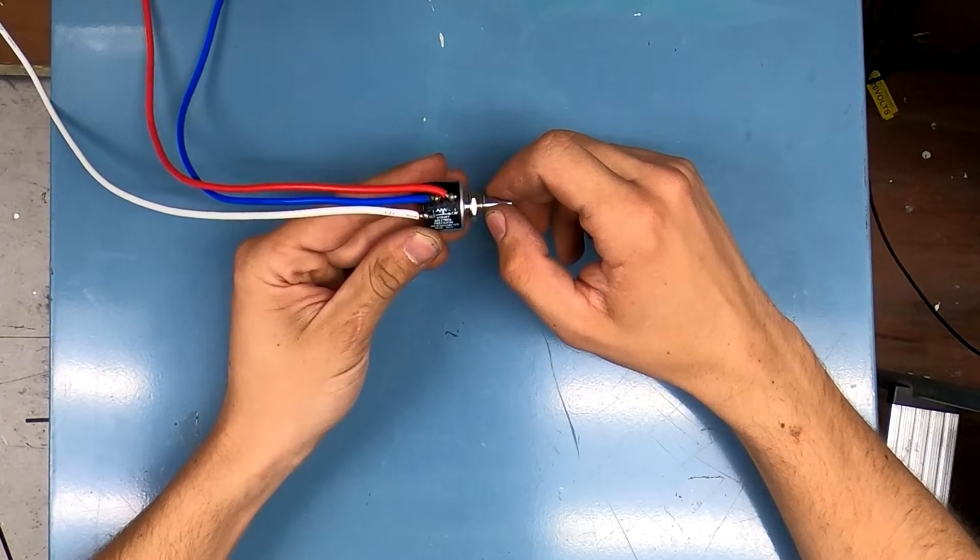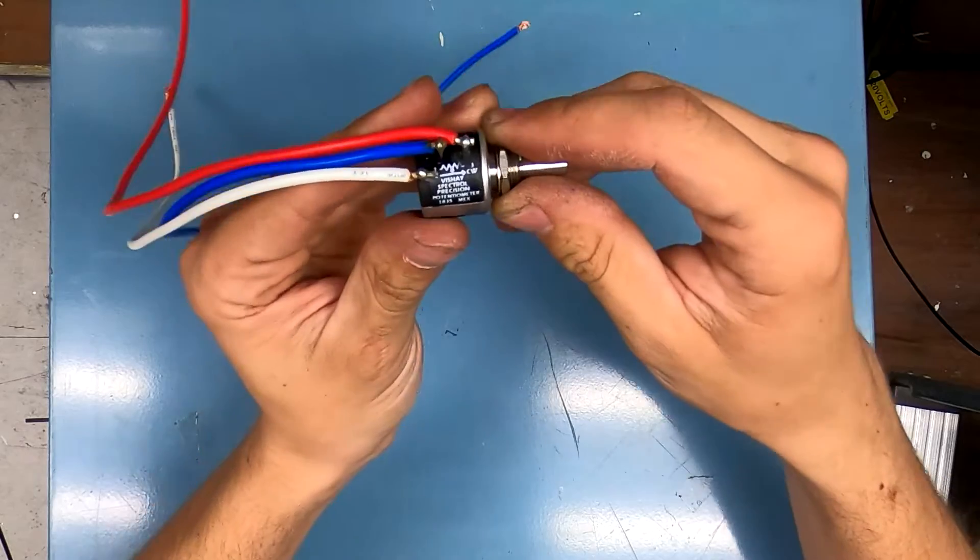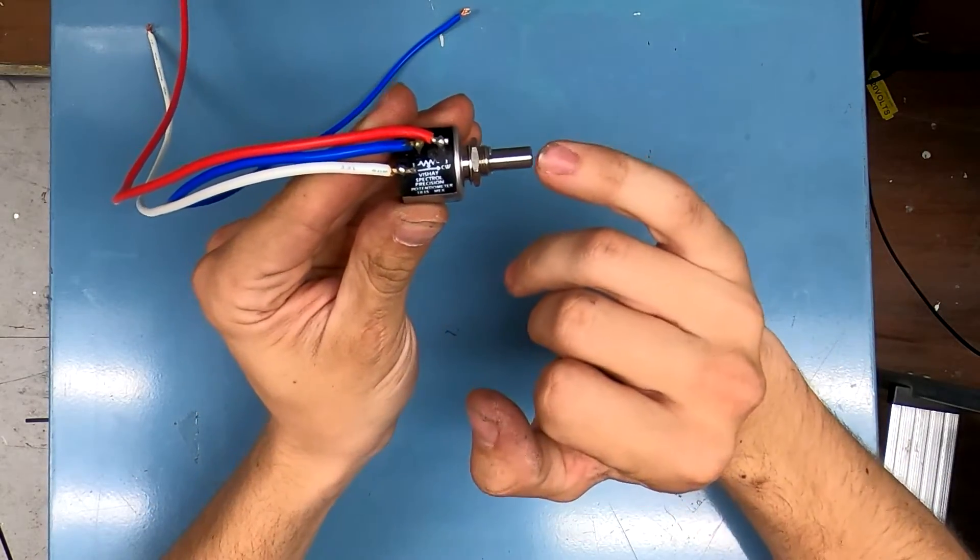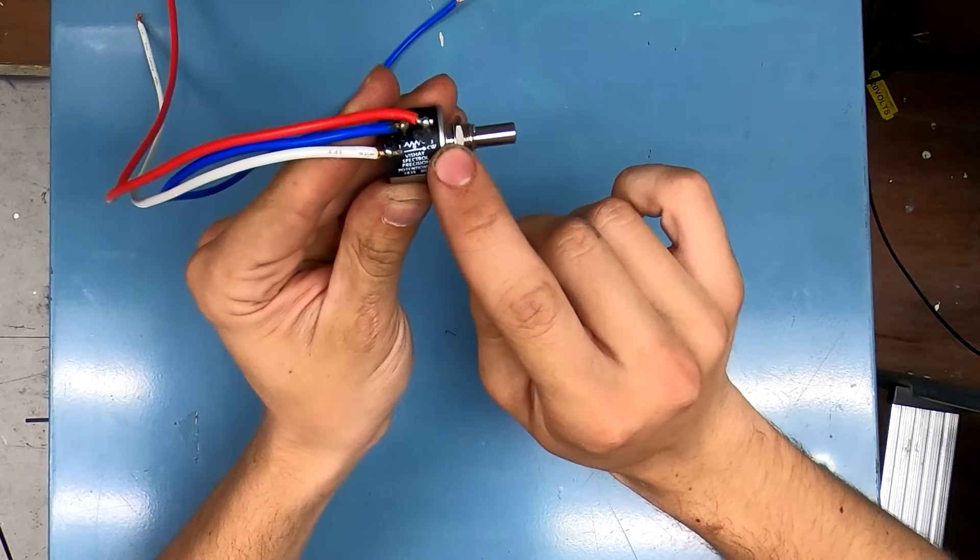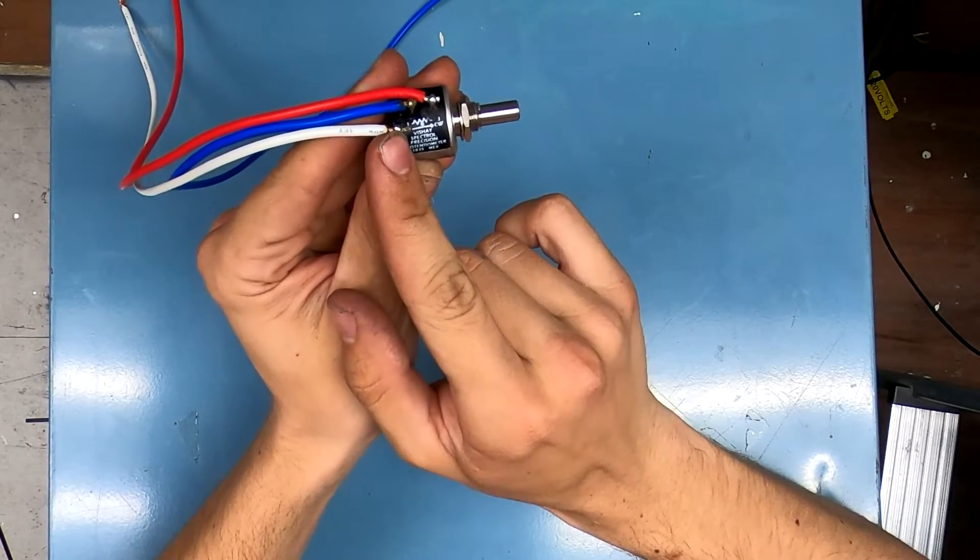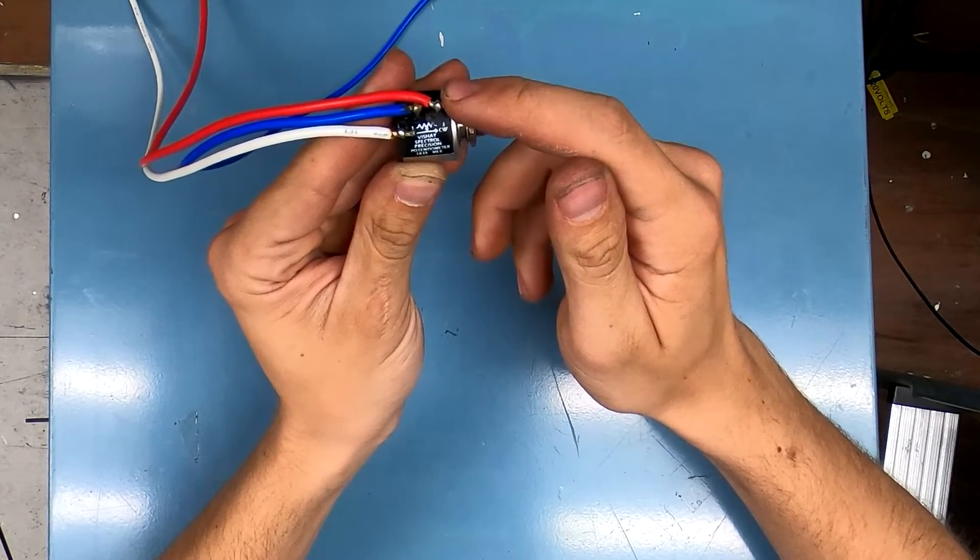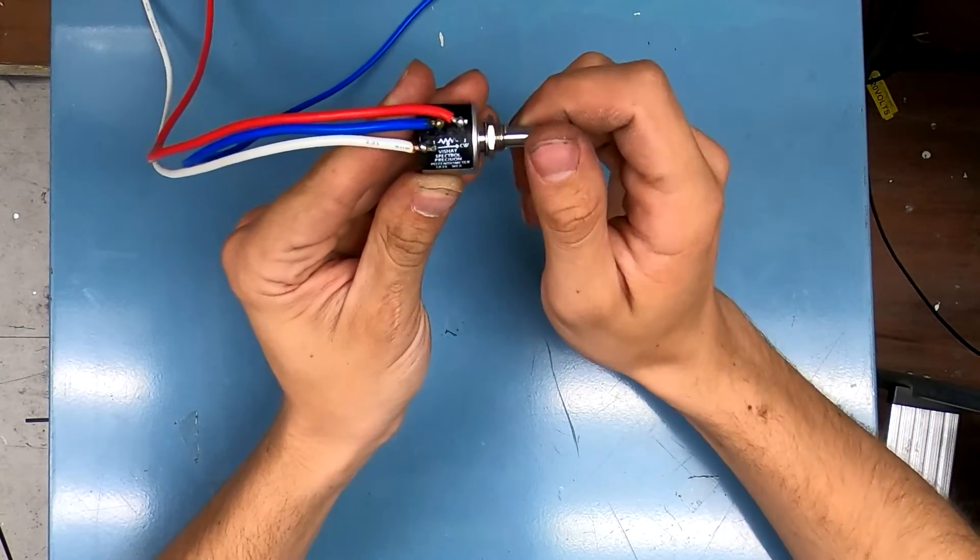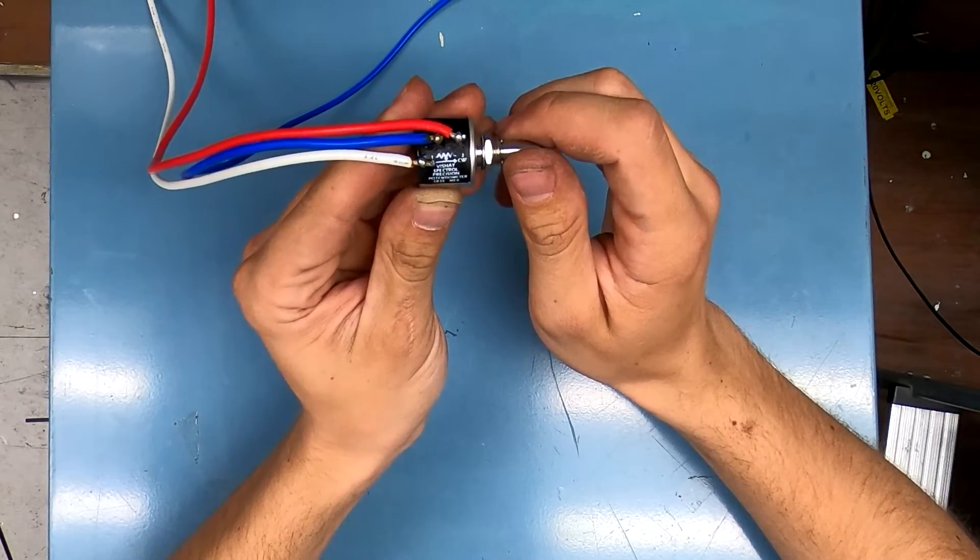Unfortunately, when I was wiring this in, I was not familiar with the pinout on this potentiometer. I thought pin one was this contact here on the outside and three was this one right here and the wiper was the blue wire, the contact in the middle. Unfortunately, that's not the case.